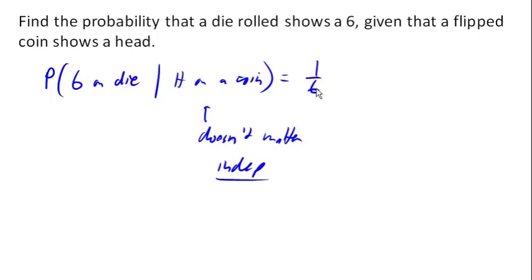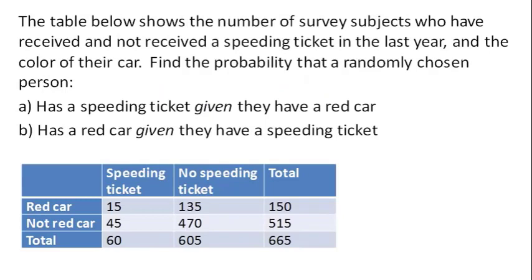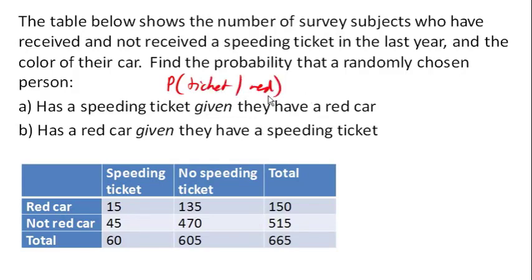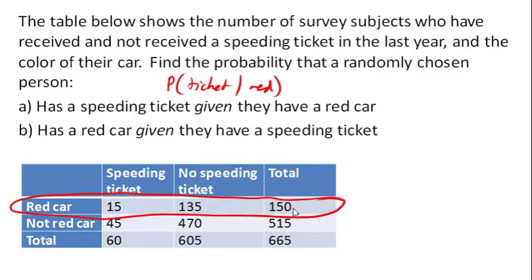Let's look at the speeding ticket table again. Let's find the probability that they have a ticket, given that they have a red car. We know right away that we're only talking about these 150 people. Out of those 150 people with a red car, how many got a ticket? 15 of them. So that's 15 out of 150, or 1 out of 10 — 10% of people with a red car also had a ticket.